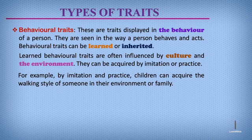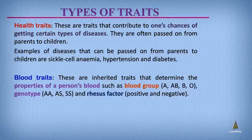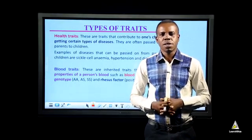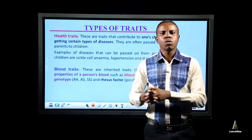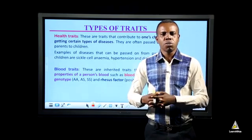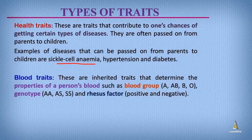Let us look at another type of traits known as health traits. Health traits are traits that contribute to one's chances of getting certain types of diseases. These diseases are called hereditary diseases and are passed on from parents to offspring. Some examples of hereditary diseases include sickle cell anemia, hypertension, and diabetes.